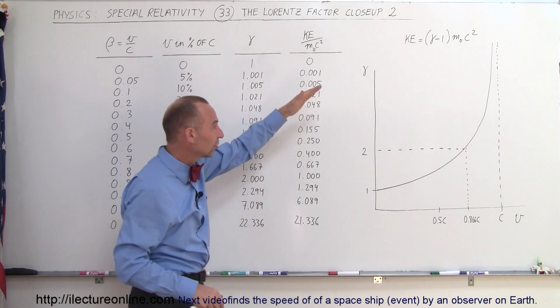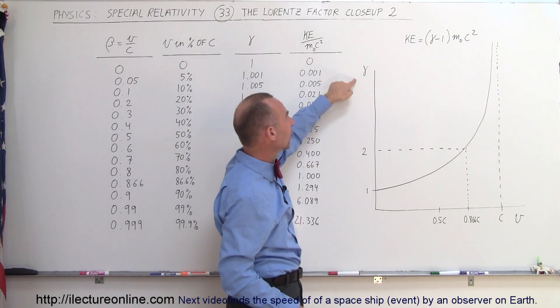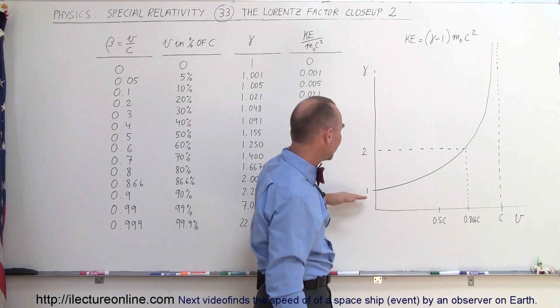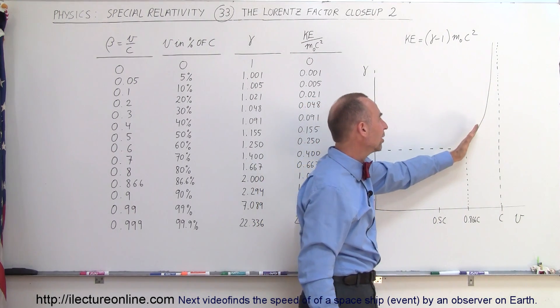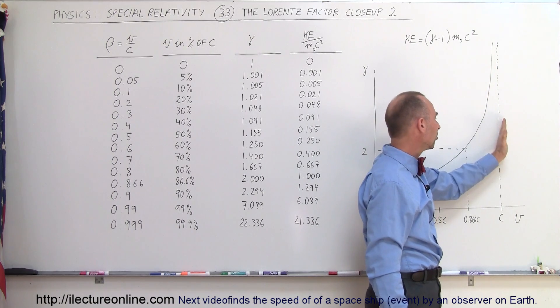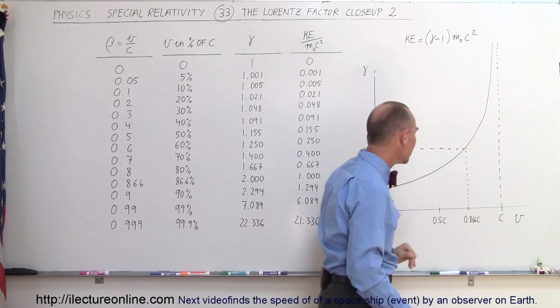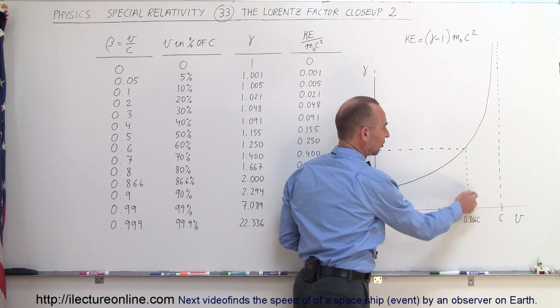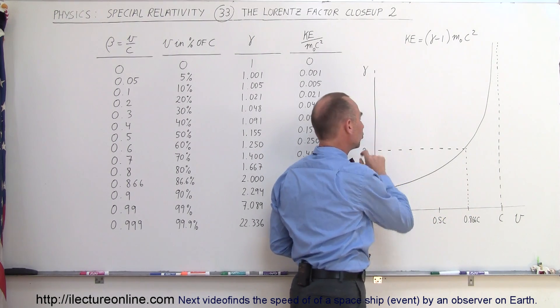If you look at this graph here, this is the Lorentz Factor as a function of velocity. As velocity increases, the Lorentz Factor increases, and eventually it will exponentially come up to this line where v equals c. Notice at 0.866c, 86.6% of the speed of light, the Lorentz Factor is 2.